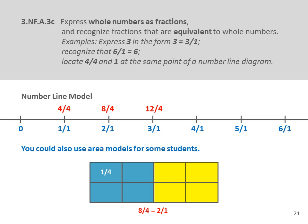The standards are simply asking us to express integers in fractional form. This is the time to extend our number line models to 4, 5, or more units in length. When children locate fractions on a longer number line, they can see that many fractions and whole numbers fall in the same place. Questions to ask might be: if I have 12 fourths, how many units do I have? If I have 6 thirds, how many units do I have?